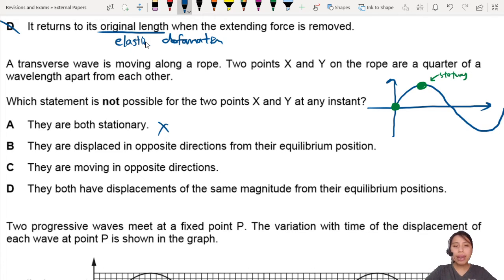B - They are displaced in opposite directions from their equilibrium position. Now, this one that I drew is not exactly displaced in opposite directions from equilibrium, but I could maybe drag them a little bit. So now they are both above the equilibrium position. Keep going.